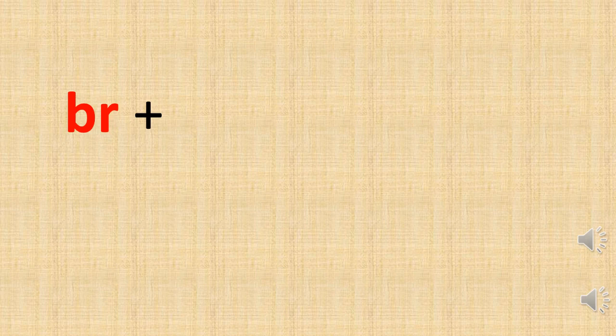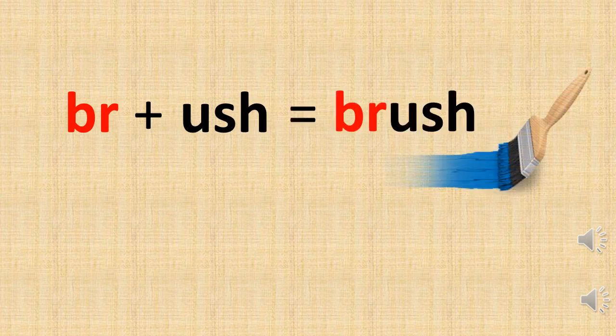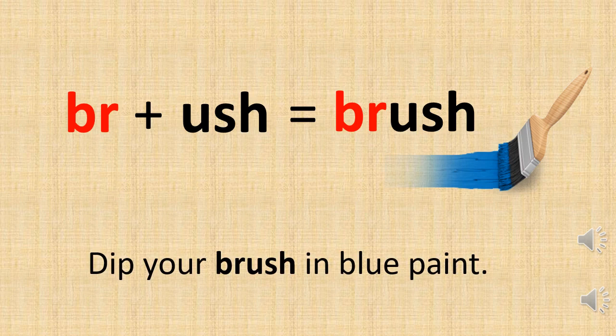Let's make different words using the br sound. As you already know, B and R makes br. So here br is given, and I am going to add -ash. And we will get brush. You can see in the picture also. We have got a new word: brush. Let's make a sentence using brush: Deep your brush in blue paint.